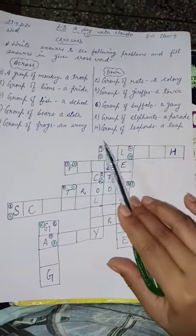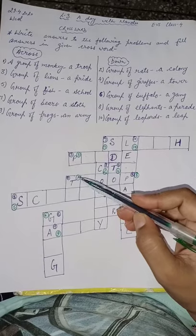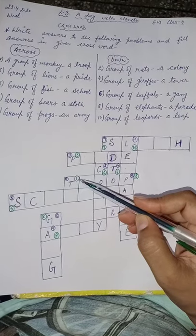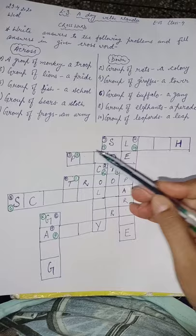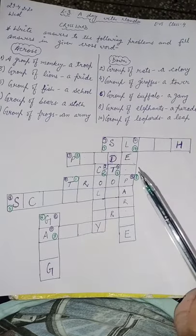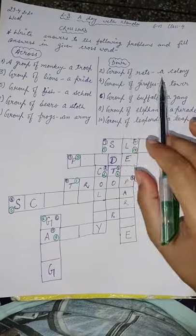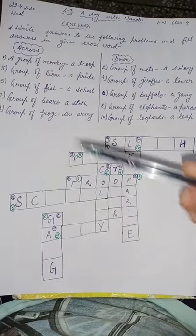These answers you have to fill in this crossword. I have written some numbers — 1, 2, 3, 7 — you can see 10 numbers are written here. You have to fill the names of these groups according to this numbering.